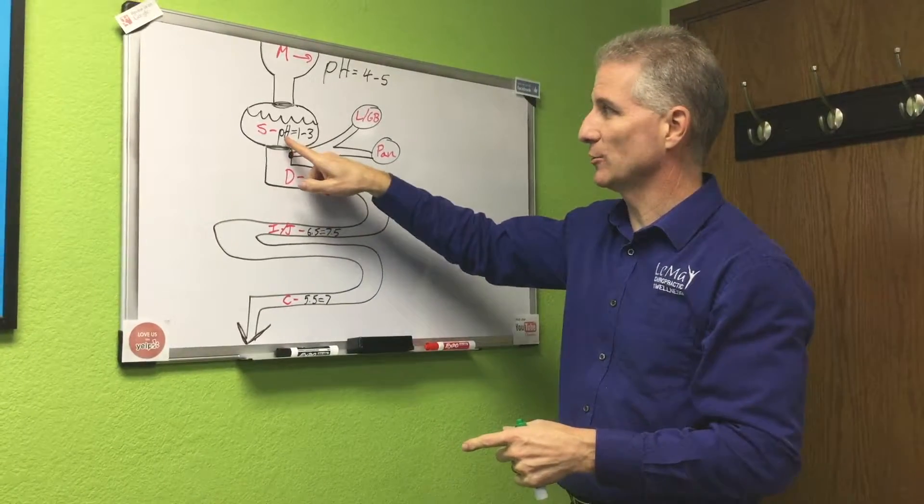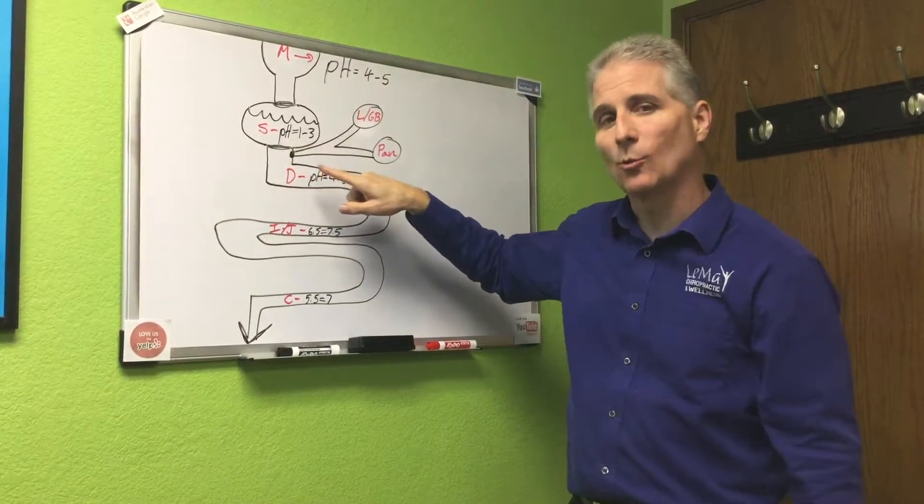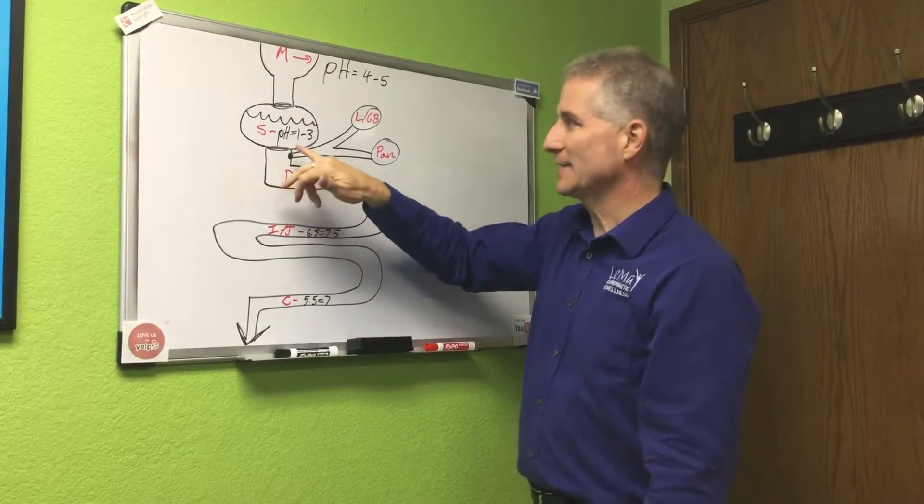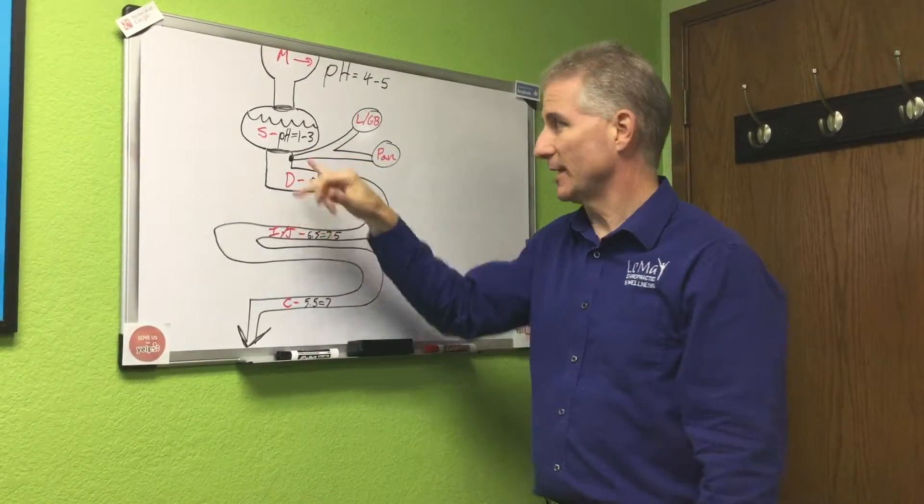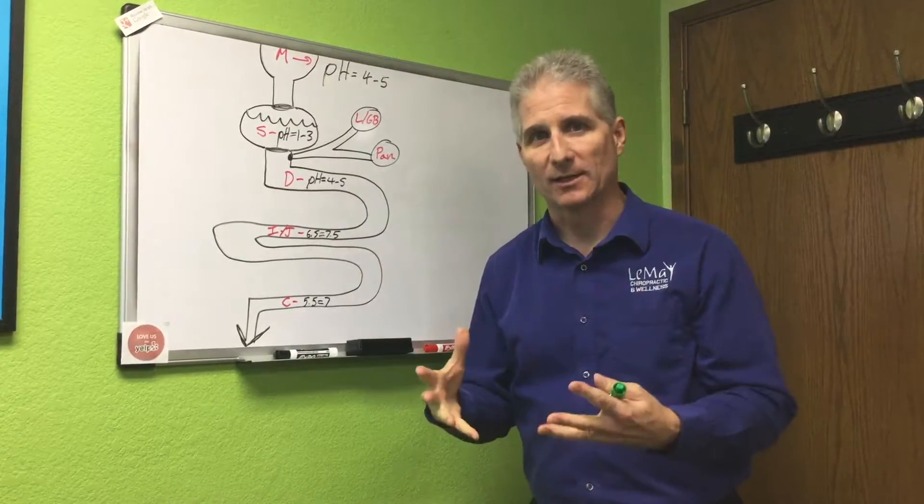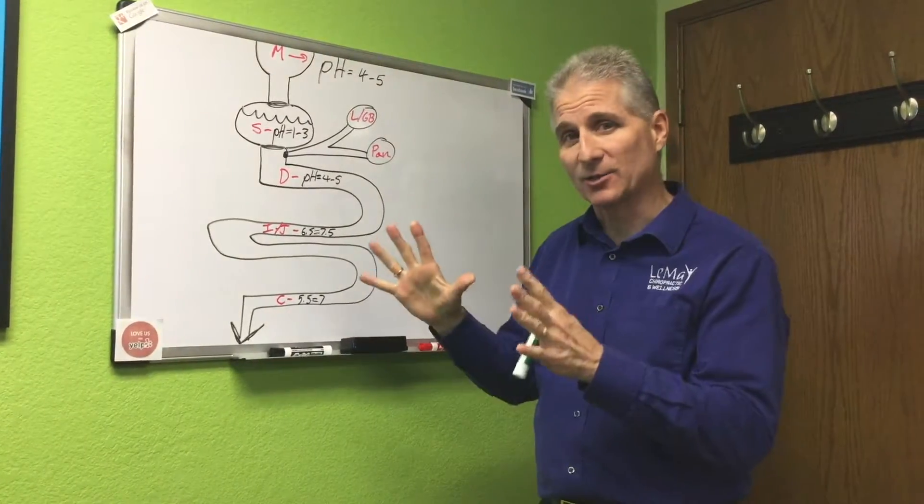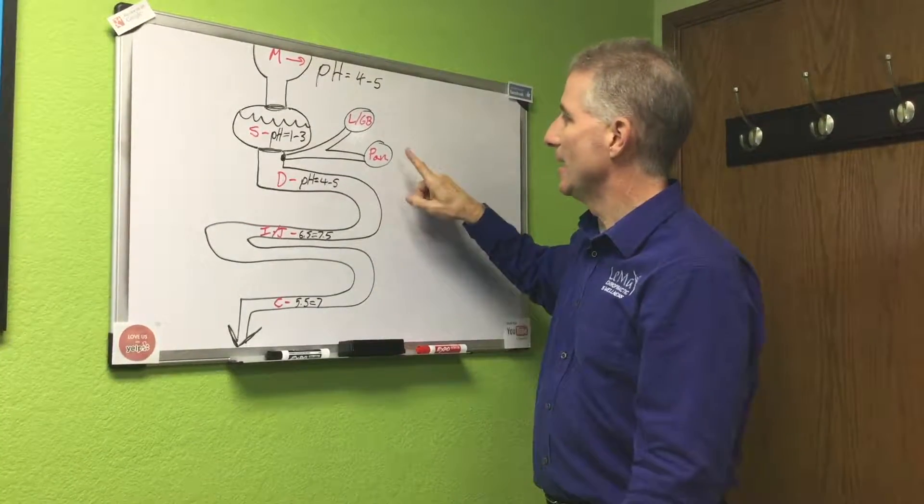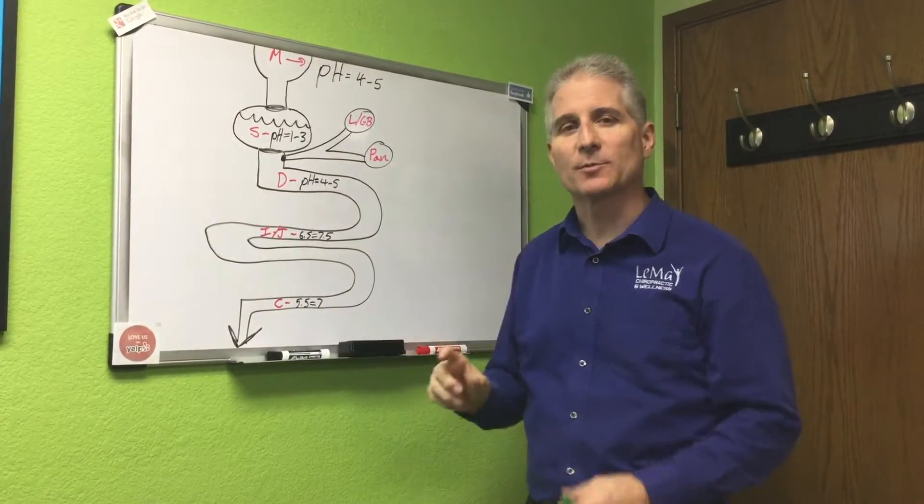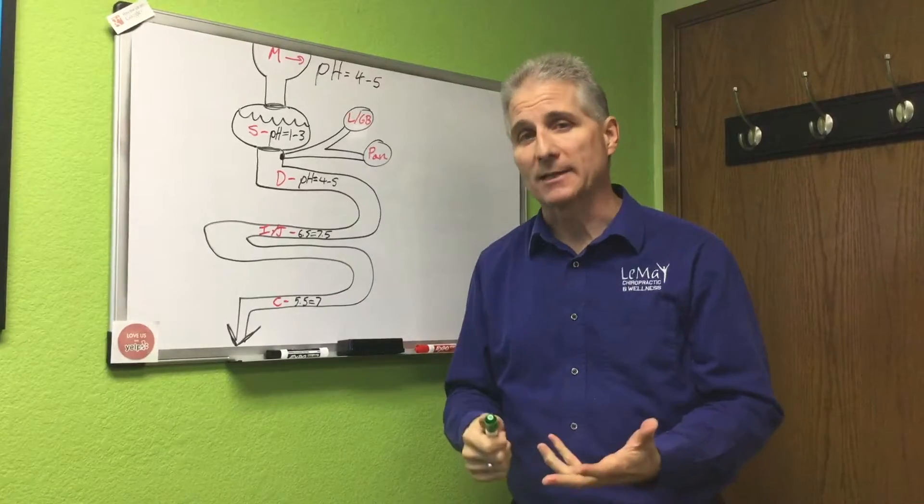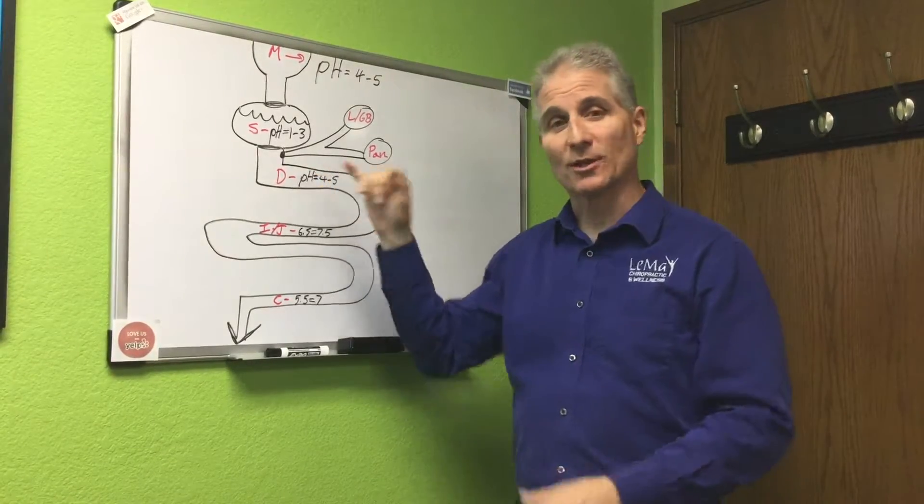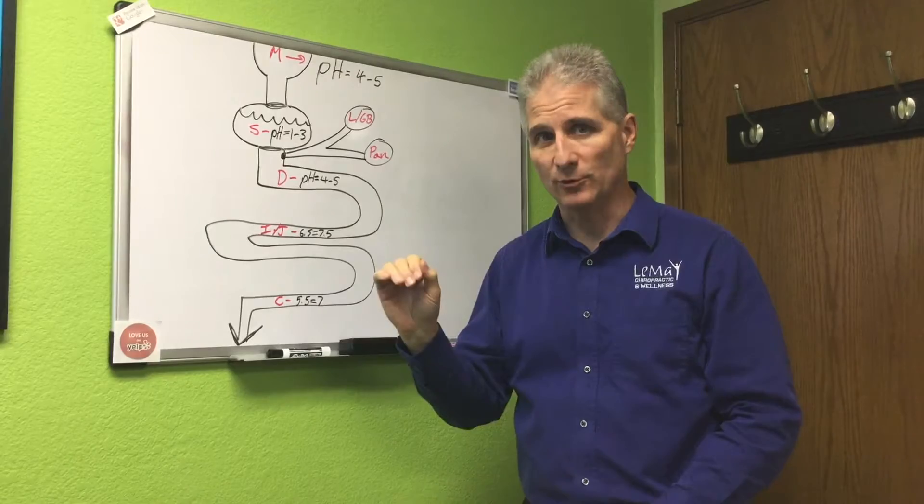So then what happens is that it goes from here down into the duodenum. Now if it's at a one to three pH and it comes down into your small intestines, it's going to burn it. So your body has what's called the liver gallbladder, which is for fat digestion. It produces bile acids. And your pancreas produces bicarbonate. So that's to help also, and it also has pancreatic enzymes to break down your foods.